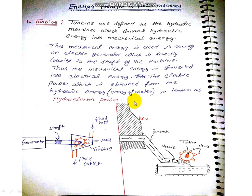Now look at some figures. You can see this is the dam where the water is stable in the rest condition — its potential energy is maximum. Now when the water comes through the pipe in the downward direction, the kinetic energy of water increases. When it comes into the nozzle, the kinetic energy of the water increases further, the velocity also increases, and the pressure decreases. This is our nozzle — if your fluid's kinetic energy is increasing then the velocity will also increase. We will study nozzles in fluid mechanics.